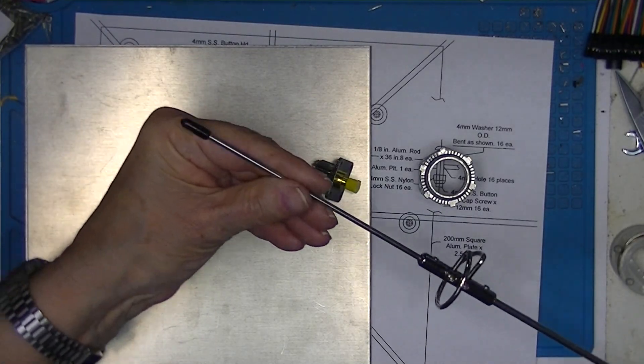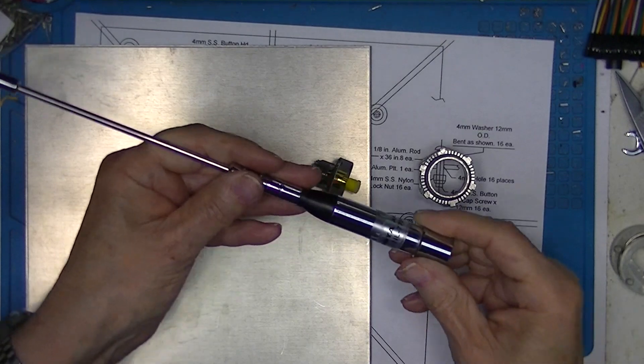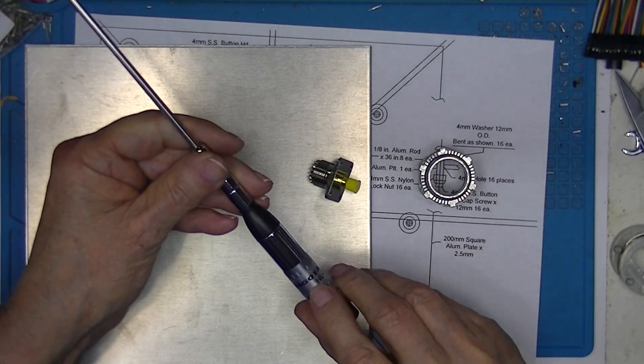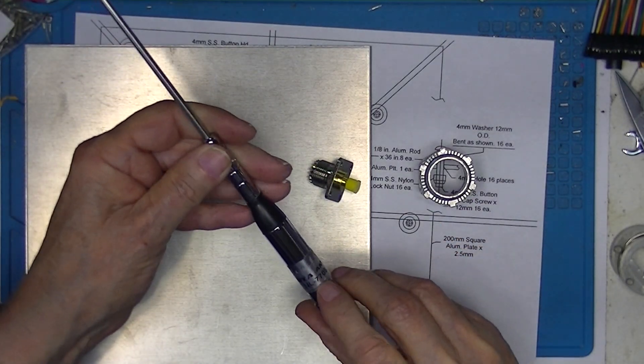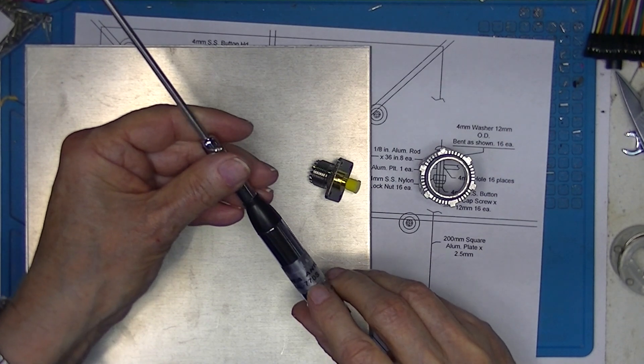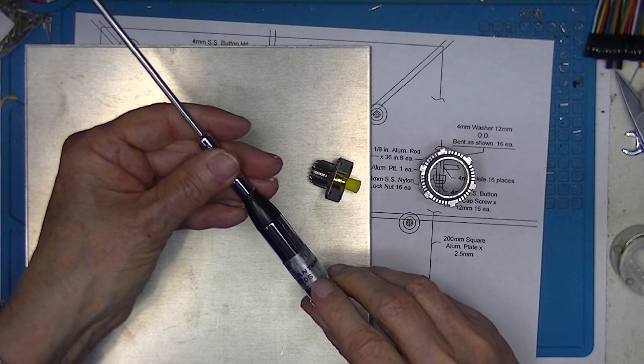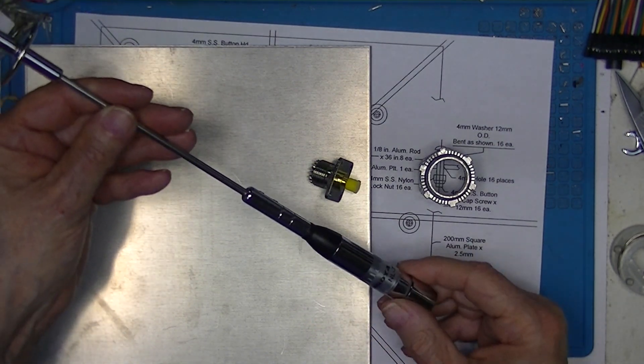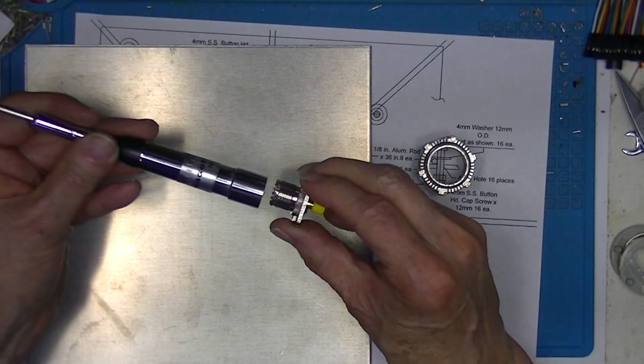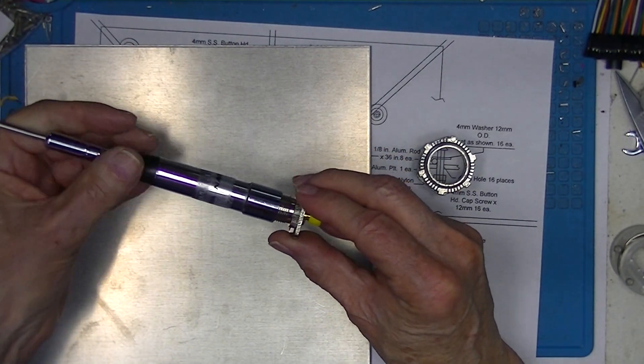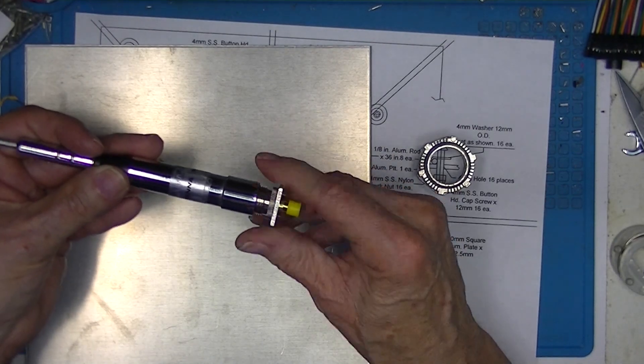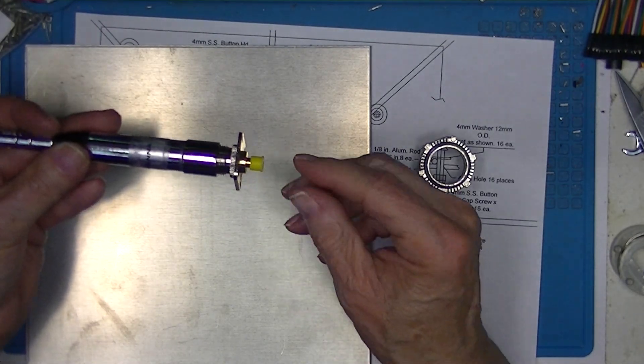I have this little antenna. It's a Nagoya NL770S. This will fit in the end of the antenna and convert it to an SMA connector.